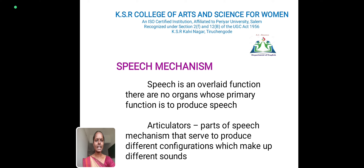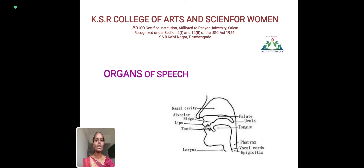Speech Mechanism is an overlaid function. There are no organs whose primary function is to produce speech. Articulators are parts of the speech mechanism that serve to produce different configurations which make different sounds. Here is a picture showing this.